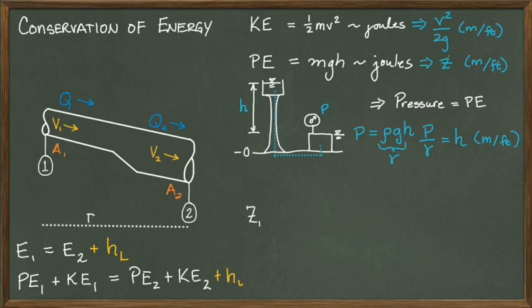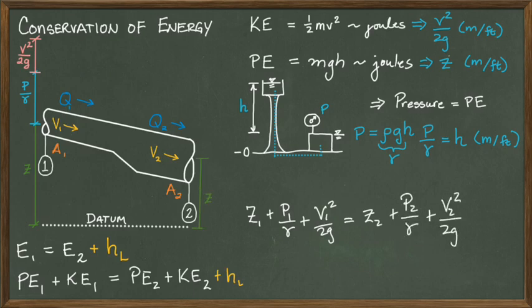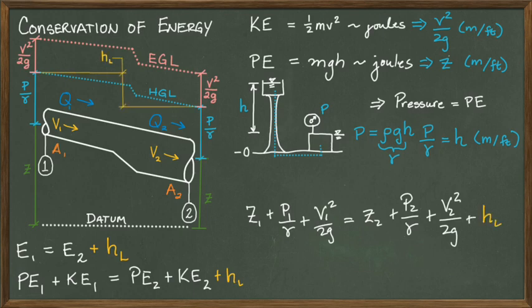Moving back to our original sketch, we can represent the elevation as a distance above the datum, plus the pressure — or what we call the pressure head — which is measured from the center line of the pipe upwards, plus the velocity head, or v squared over 2g, which extends up above the pressure head. This is the reason why we convert all of the energy units into lengths: so that we can visualize the result and easily add or subtract them as needed. We then write the right-hand side of the equation with similar energy components at point 2, and we can see the energy lost in the pipeline as the difference in energy between points 1 and 2.